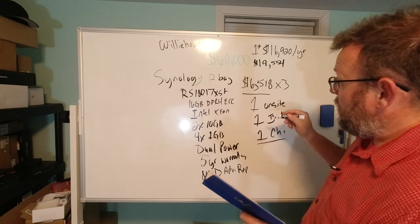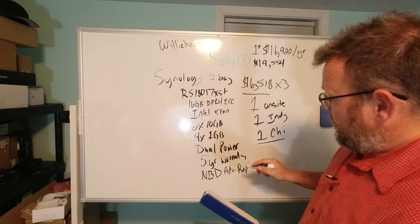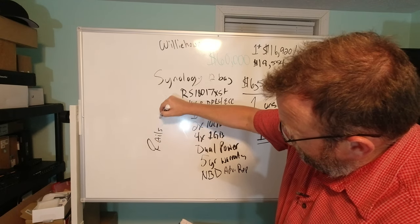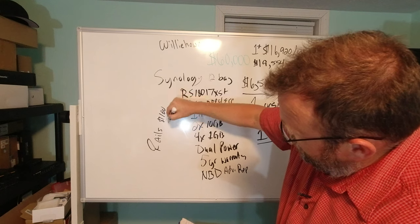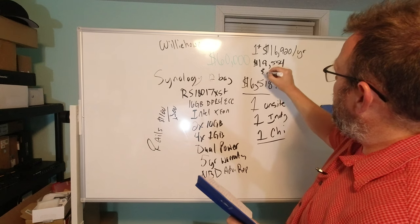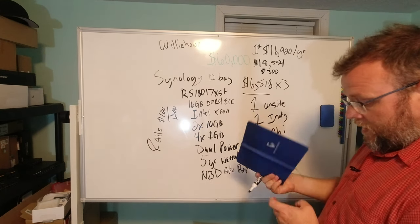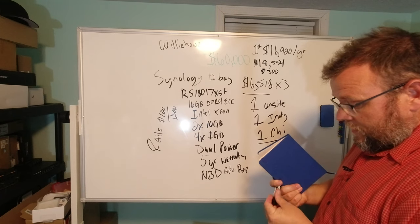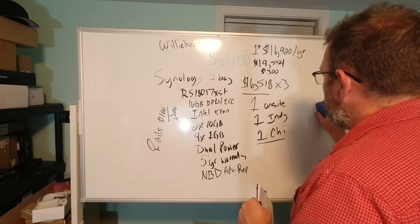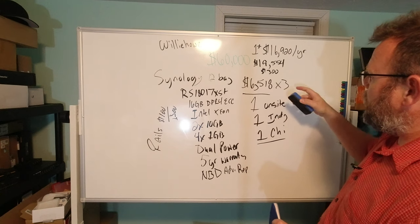So that cost is, I believe, that's $19,554. And then the rail kits, so the rail kit is extra, and the rail kit is $100, so that's $300 for rails.